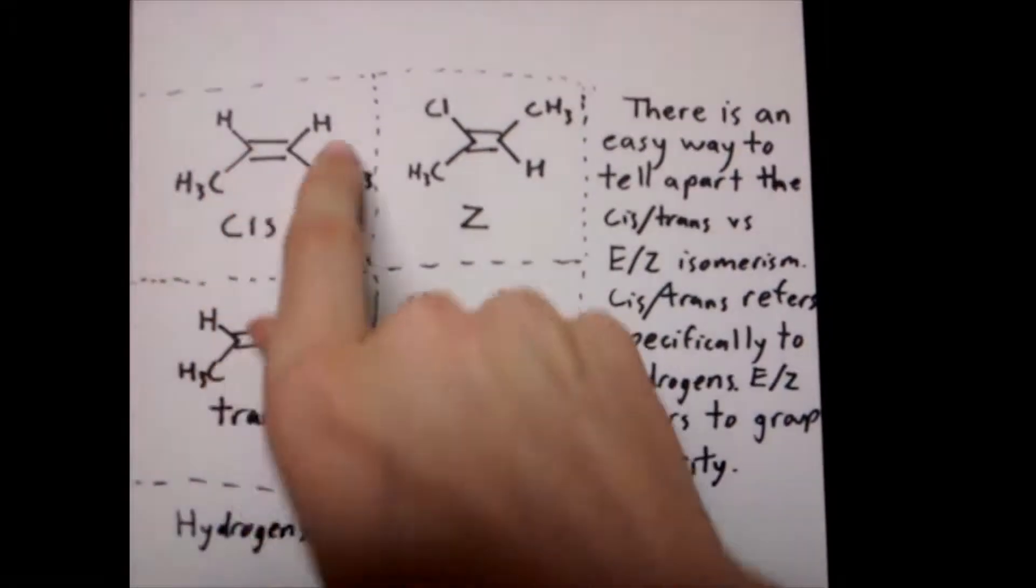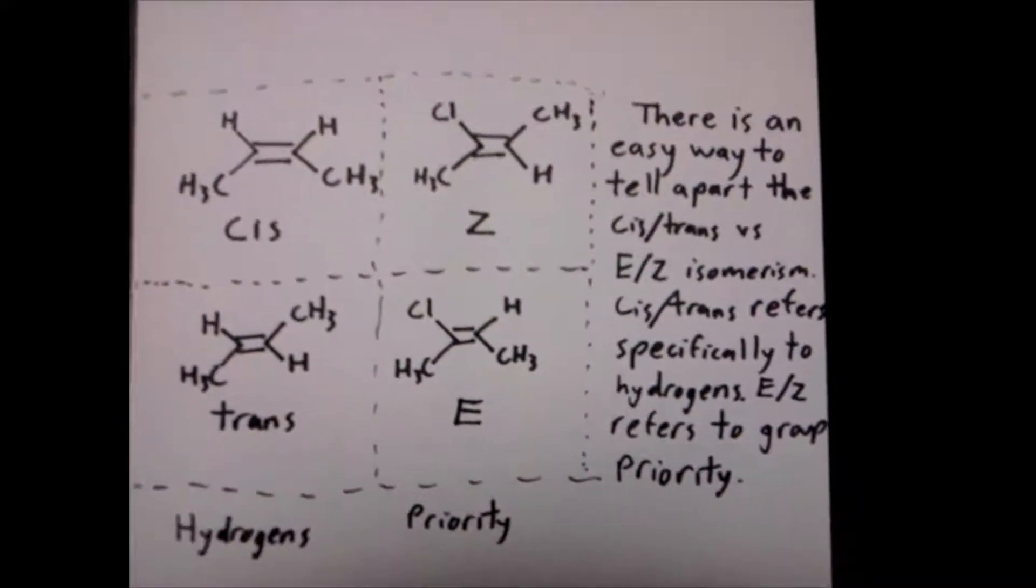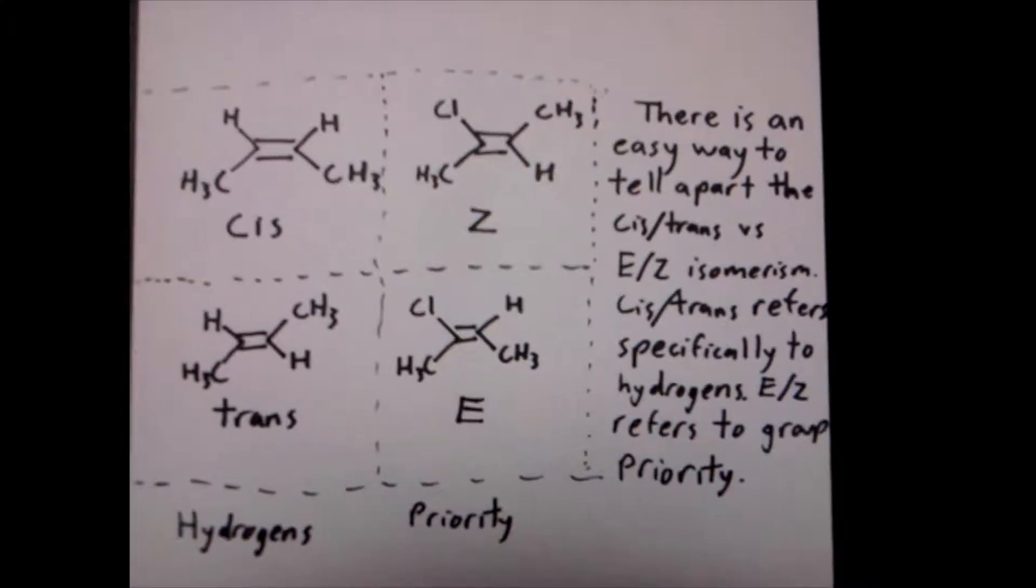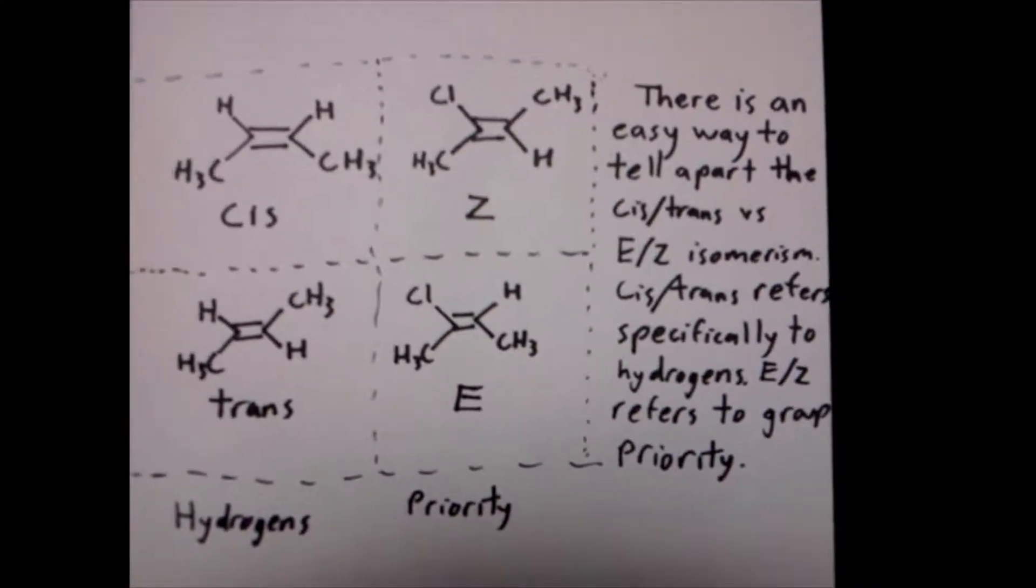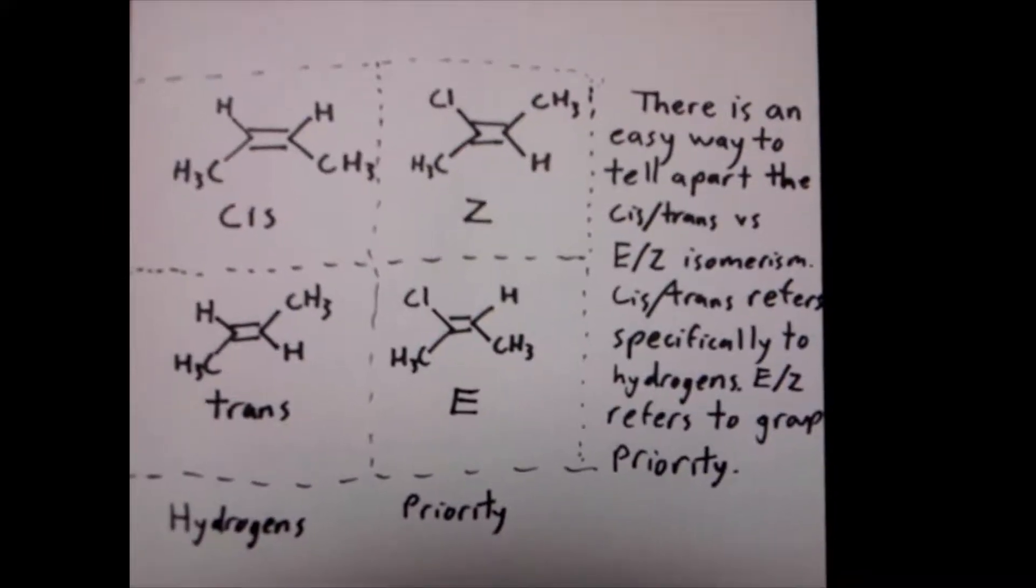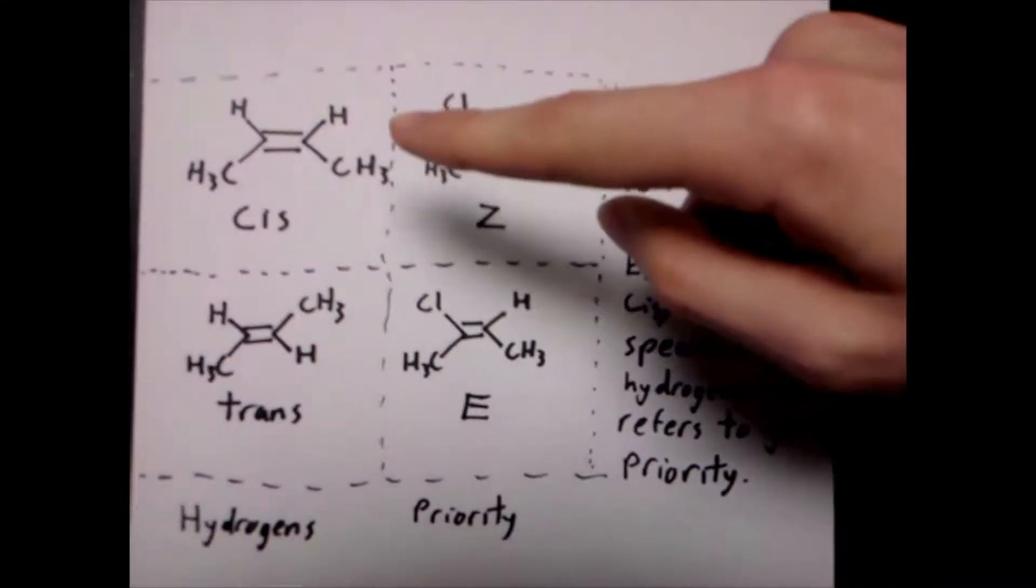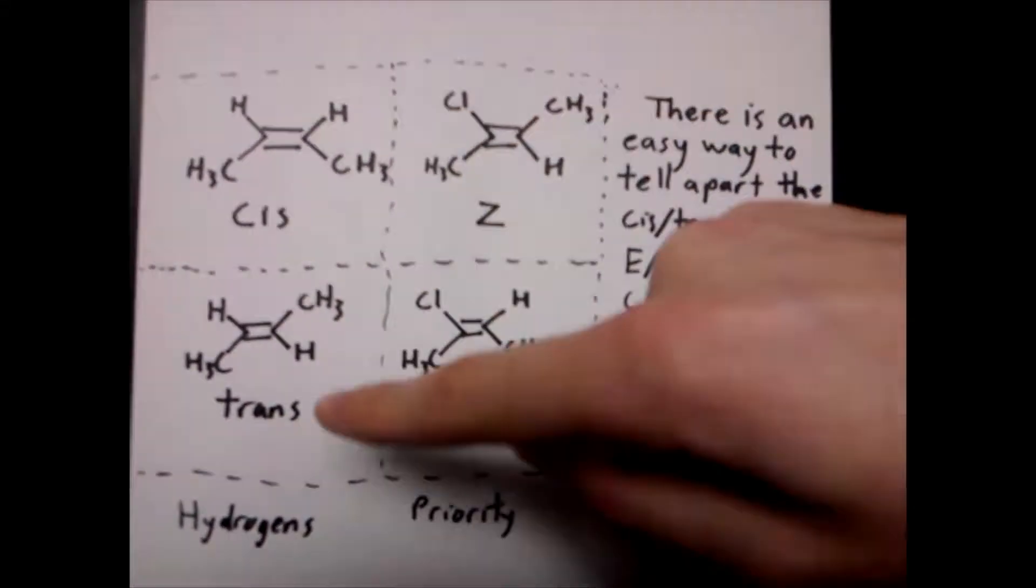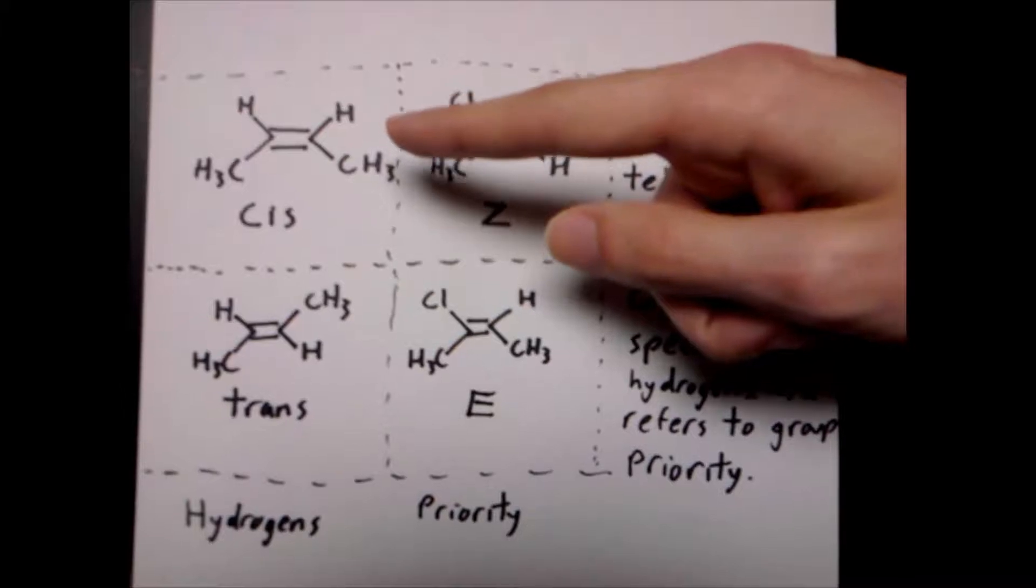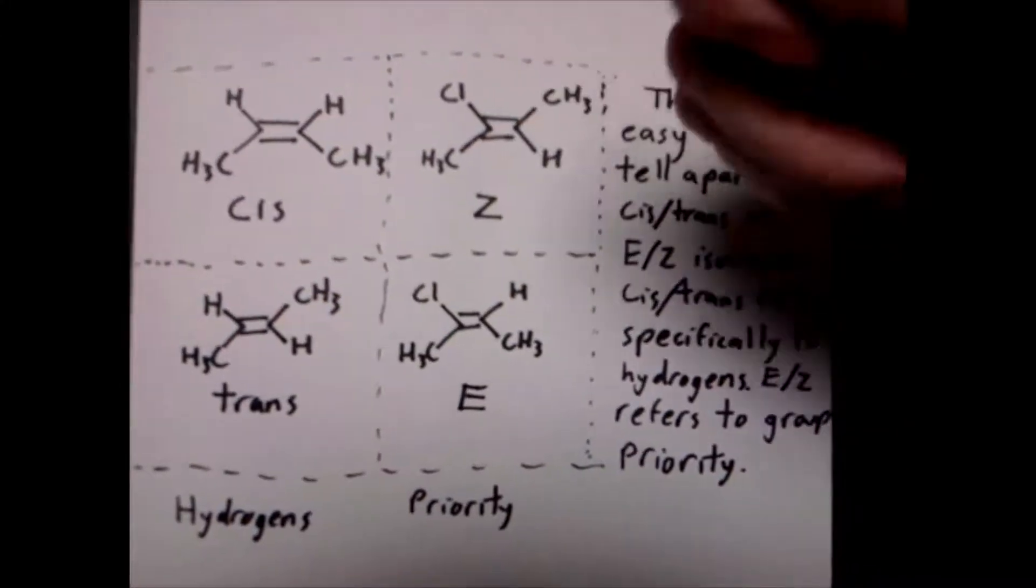You see over here, each one of these compounds has two hydrogens. It has to have two hydrogens on adjacent carbons on a fixed bond. Not necessarily a double bond, but a fixed bond. And these hydrogens, based on where their positions are relative to each other, will designate the compound as being cis or trans. Cis when the hydrogens are on the same side, trans when they're across from each other.